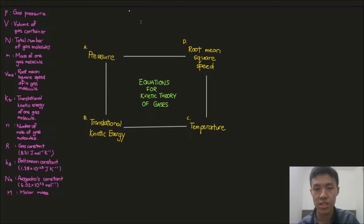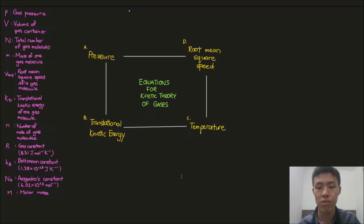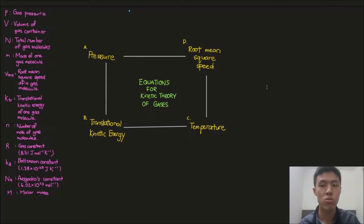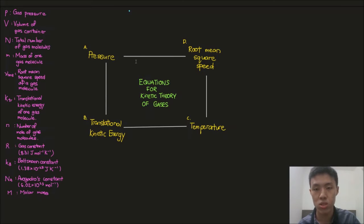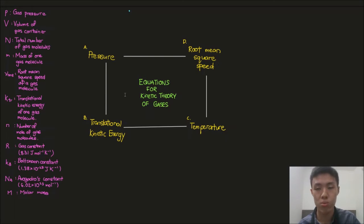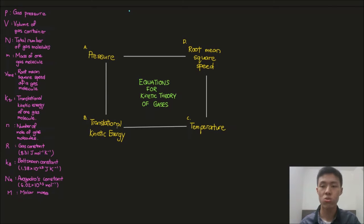I'll write something in this space that connects two quantities — the equation that connects them. So if I write something here, the final equation obtained will connect pressure and translational kinetic energy. If I write a derivation here, that derivation will connect translational kinetic energy with temperature, and the same for relating temperature with root mean square speed. The inside of the rectangle will be the concept I use to relate those two quantities on each side.